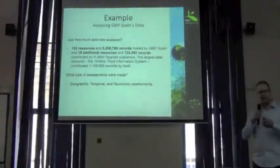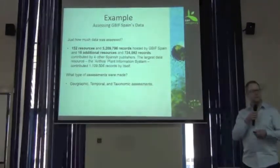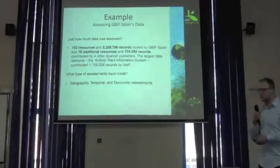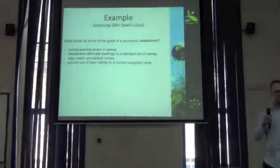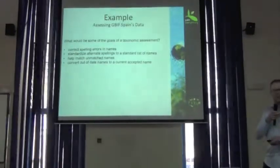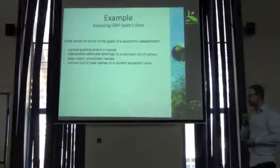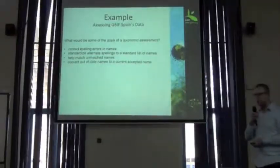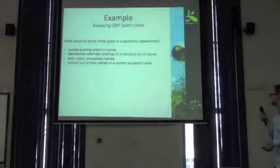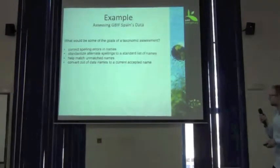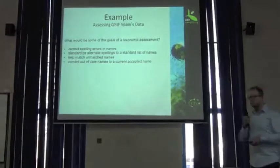In this assessment made by Javier and his team, they ran a bunch of different assessments — taxonomic, geographic, and some temporal assessments. This is just an introduction, and the rest of these presenters will cover more assessments in detail later. So, what were some of the goals they were trying to accomplish? Well: correct some spelling errors in names; standardize alternate spellings to a standard list; match unmatched names that don't match against a Catalog of Life or similar checkers; and try to convert out-of-date names to the current accepted name.